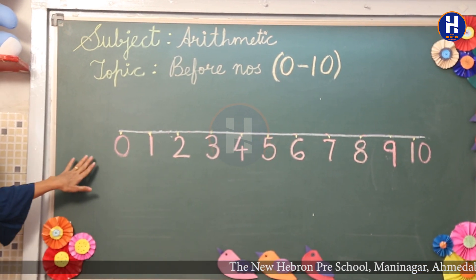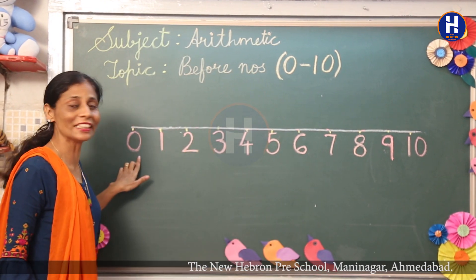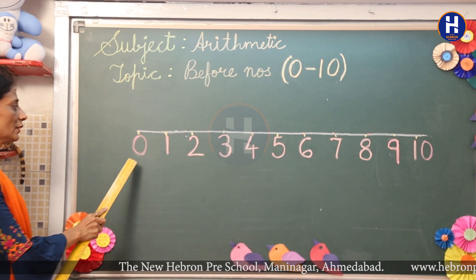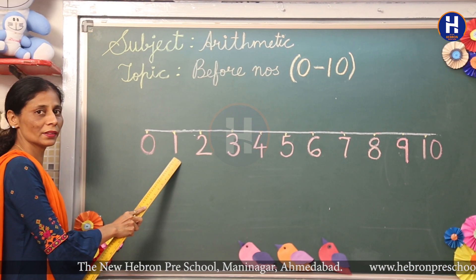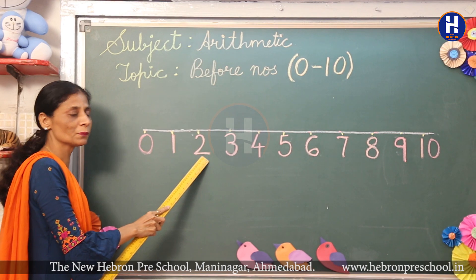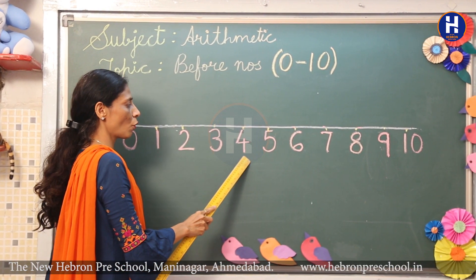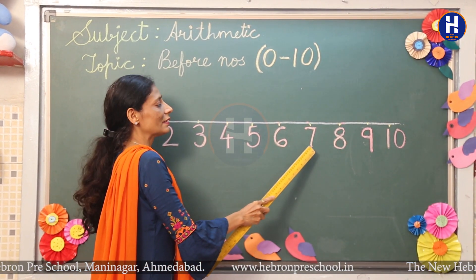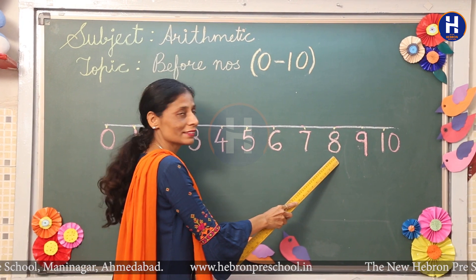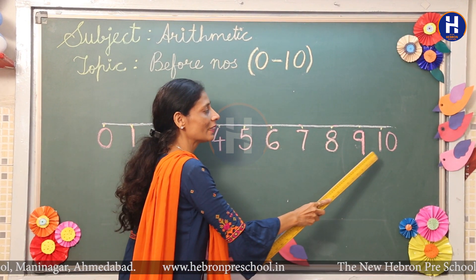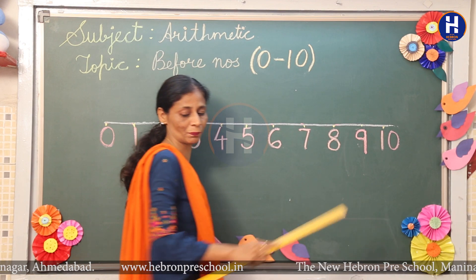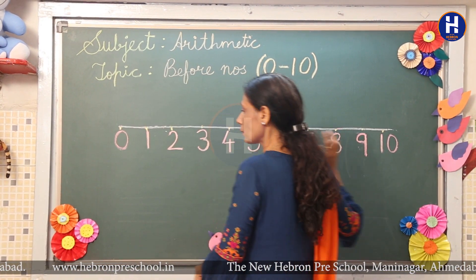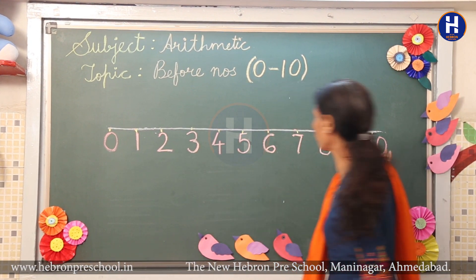Children, your numbers are written on the board from 0 to 10. Now we will repeat them: 0, 1, 2, 3, 4, 5, 6, 7, 8, 9, 10. Children, now we are going to repeat these numbers in reverse.